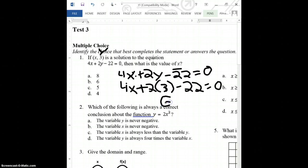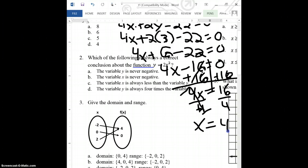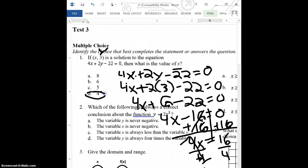And so I'm going to end up with 4x plus 2 times 3 minus 22 equals 0. And 2 times 3 is 6, so I have 4x plus 6 minus 22 equals 0. I have 4x minus 16 equals 0. Now my goal is to get all the variables on one side and my numbers on the other side. I'm going to move the 16 over to the right. I'm going to add 16 to both sides, and I'm left with 4x equals 16. To get that x by itself, I divide by 4, and so I end up with x equals 4. So my answer here is C.